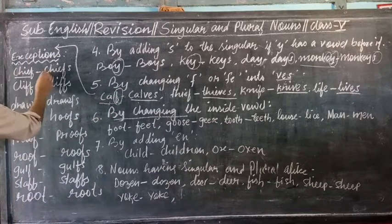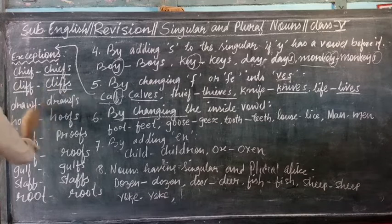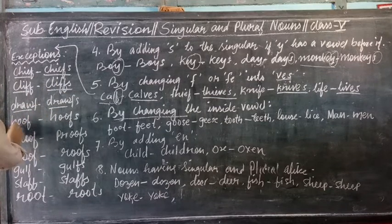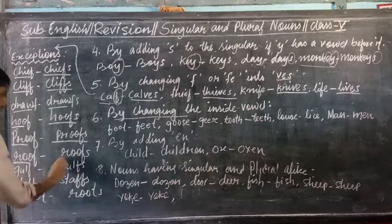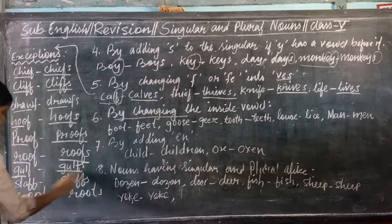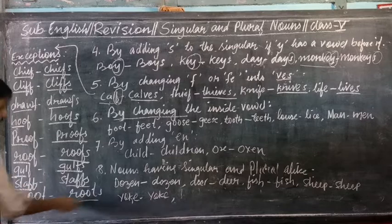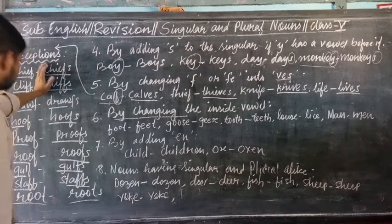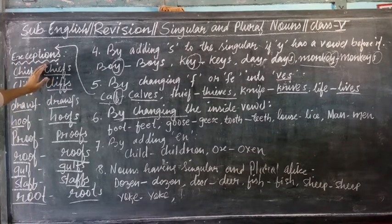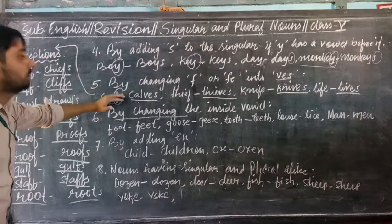So for these exception words — chief becomes chiefs, roof becomes roofs, proof becomes proofs — we simply add S. These words do not follow the F or FE to VES rule of point number 5.